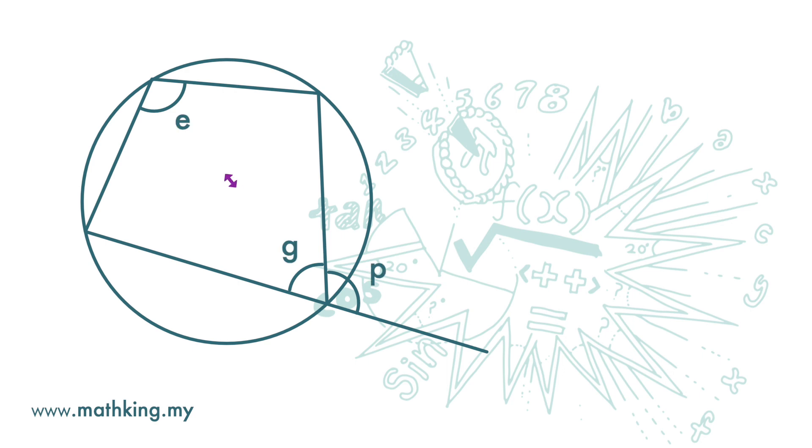Let's look at this diagram. Angle E and angle G are interior opposite angles. Angle G plus angle E equals 180 degrees. We have just learned about this.